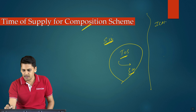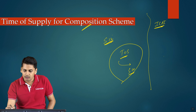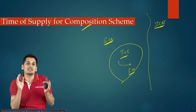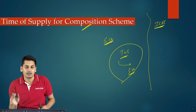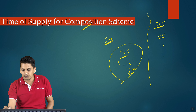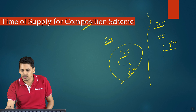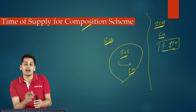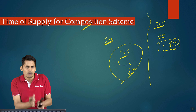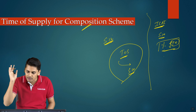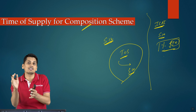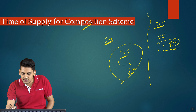ICAI has taken a stand: even for a composition scheme person, even for a person paying taxes under composition scheme, the date on which he is receiving the payment is not relevant. This is because a person paying taxes under Section 10 pays taxes as a percentage of his turnover, and the amount received as advance does not form a part of the turnover. Therefore, even for a composition taxable person supplying goods, the date on which he receives advance or payment is not relevant — this is ICAI's stand.